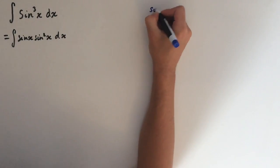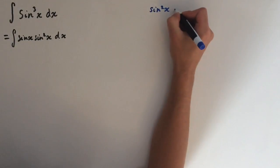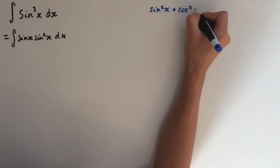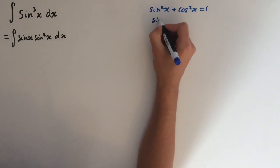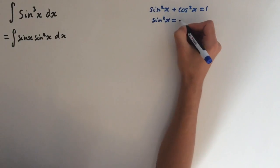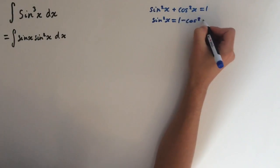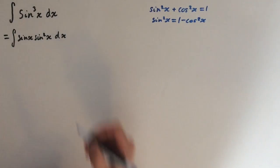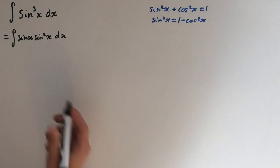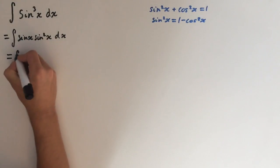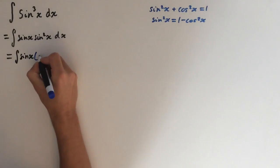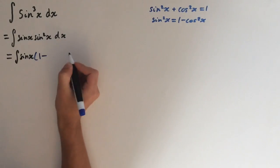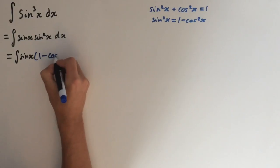look at the identity sine squared x plus cosine squared x equals 1. So let's rearrange for sine squared. This gives us 1 minus cosine squared x. So now we can substitute this back into here. This gives us the integral of sine of x times 1 minus cosine squared of x and dx.